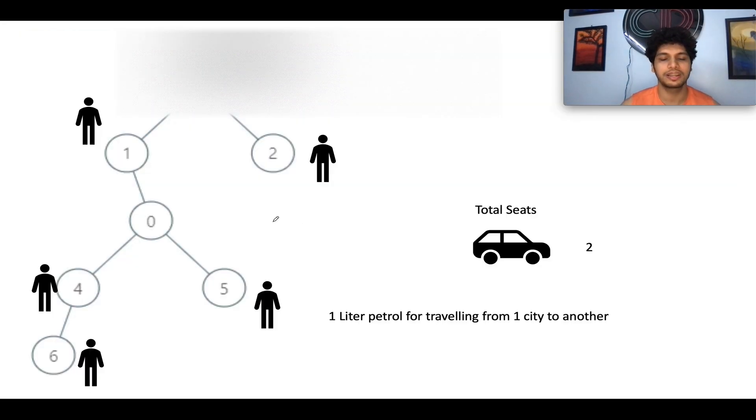As per the question, you are given a well connected graph of N cities. At each city, you presently have only one passenger and you need to make sure that these passengers travel to the final destination city, which in this case happens to be the 0th city. What do you need to identify? You need to count the total number of petrol needed to make this travel successful such that all the passengers finally land at the 0th city. How will they be commuting? They will be commuting by cars. And in the question, you are also told the total seat capacity of the car.